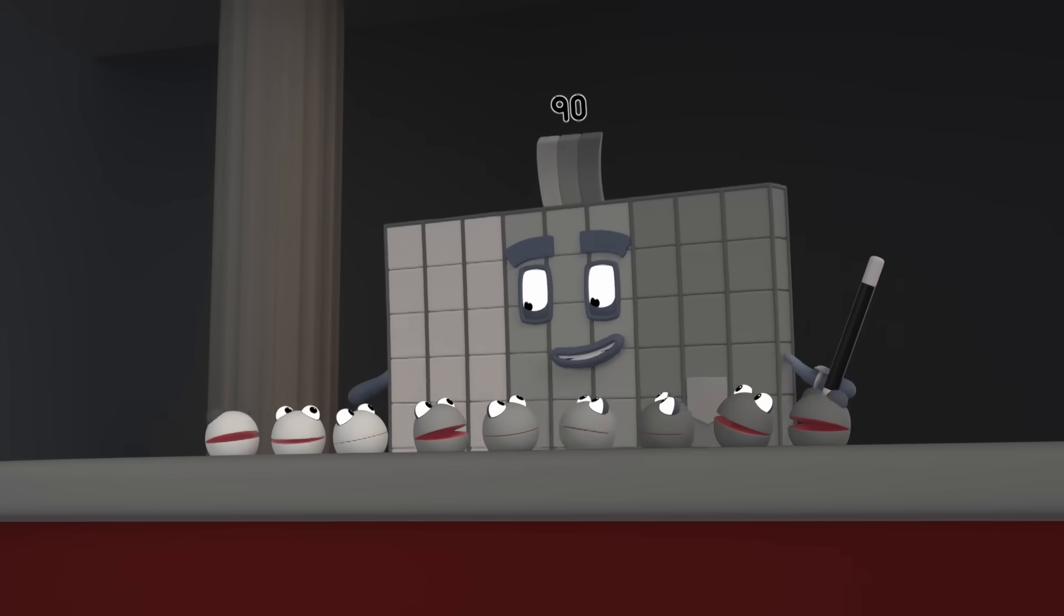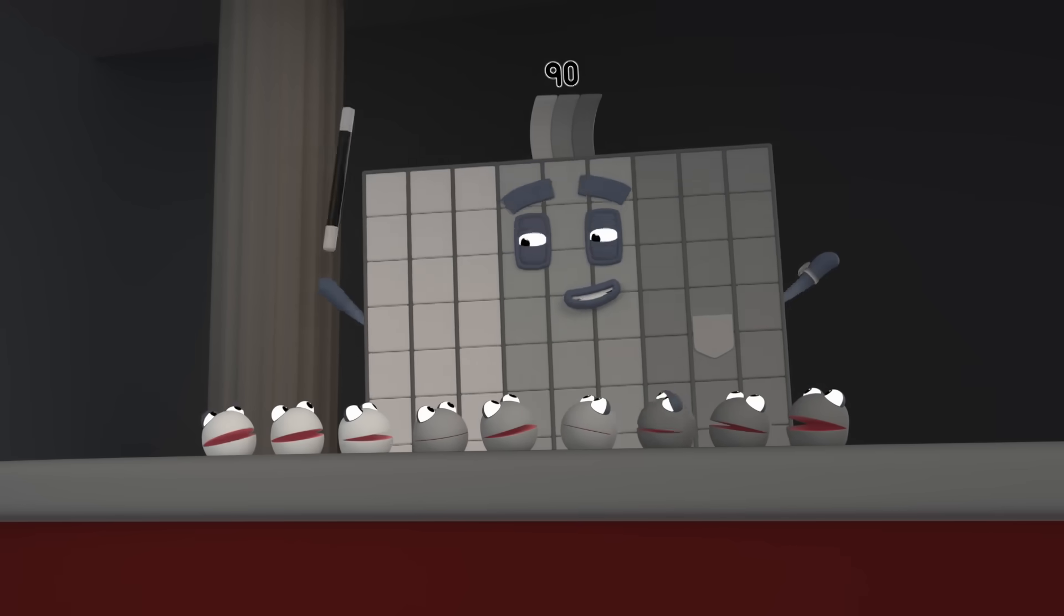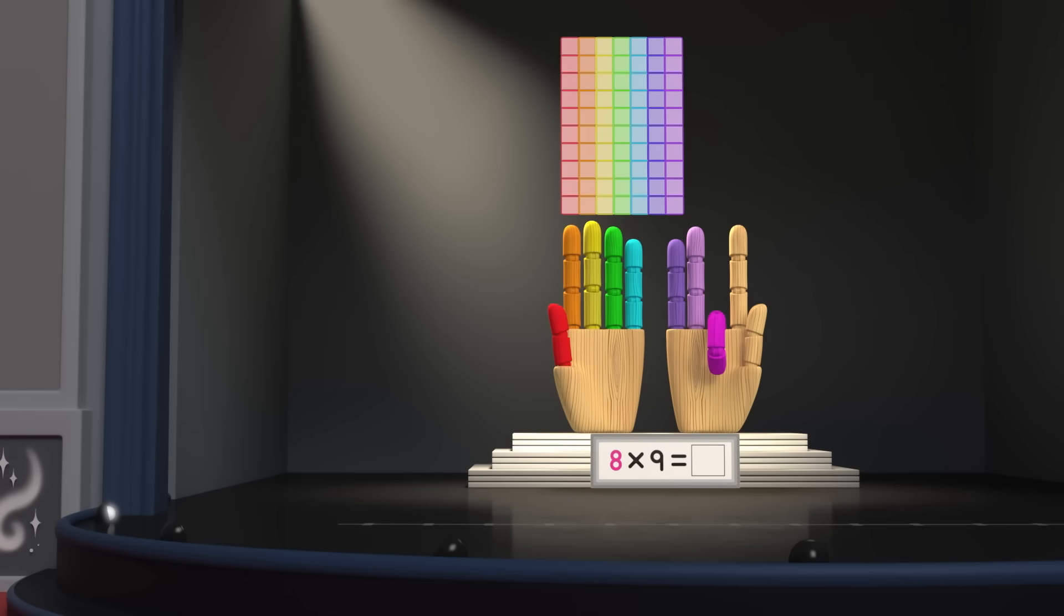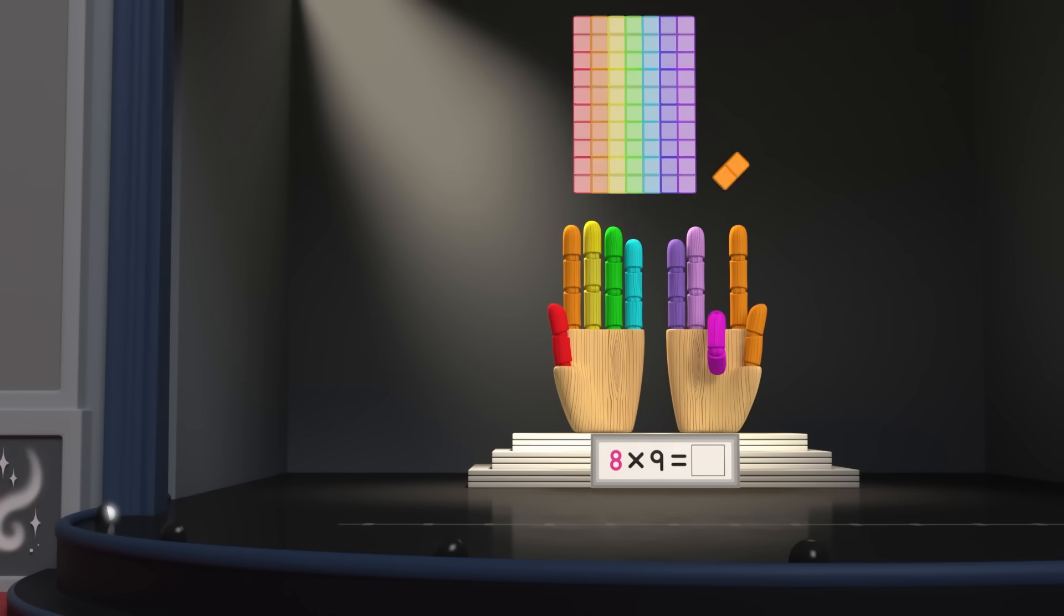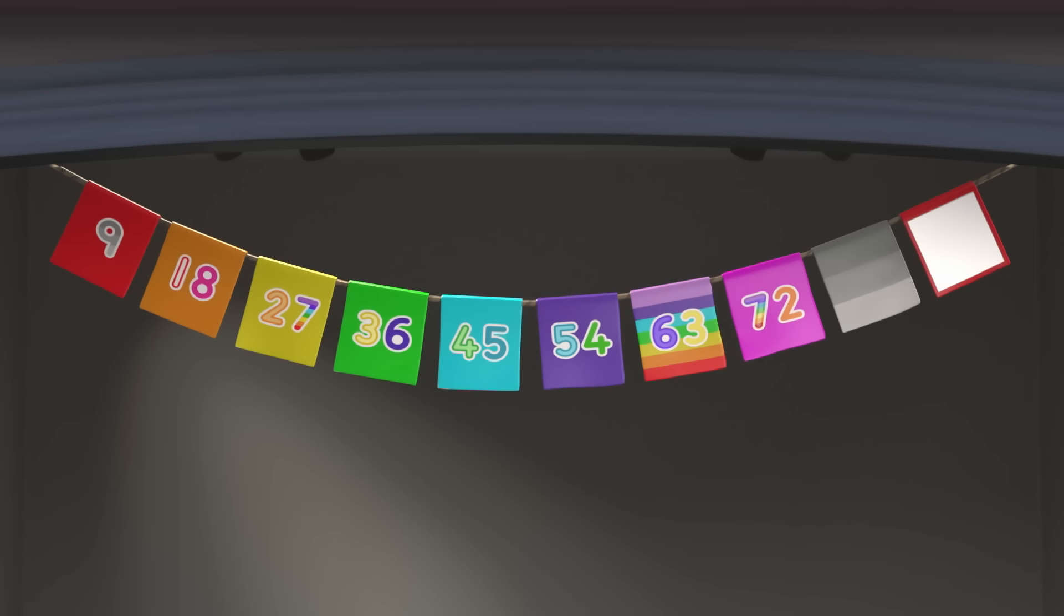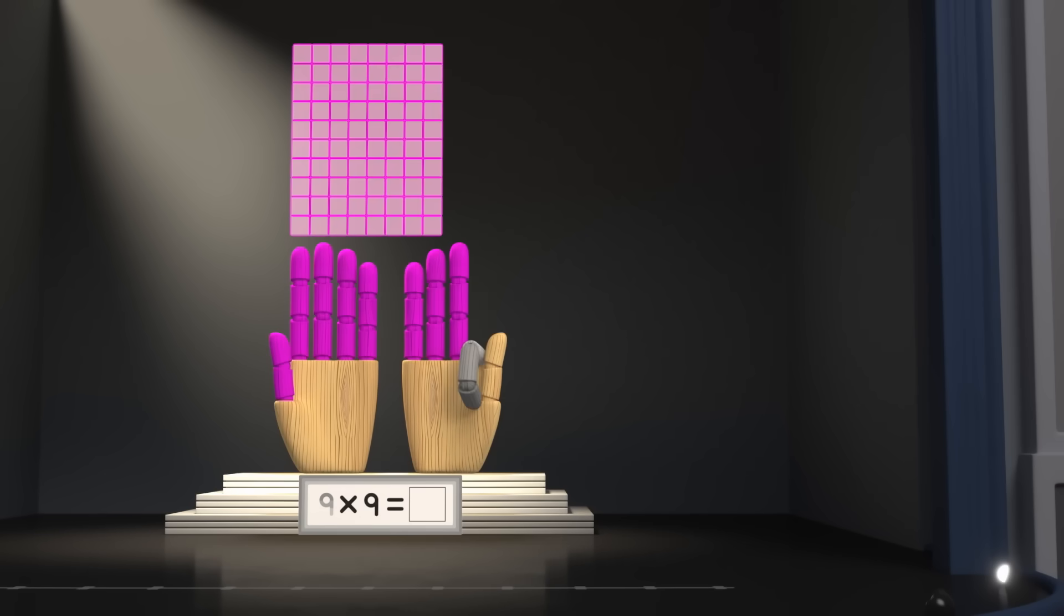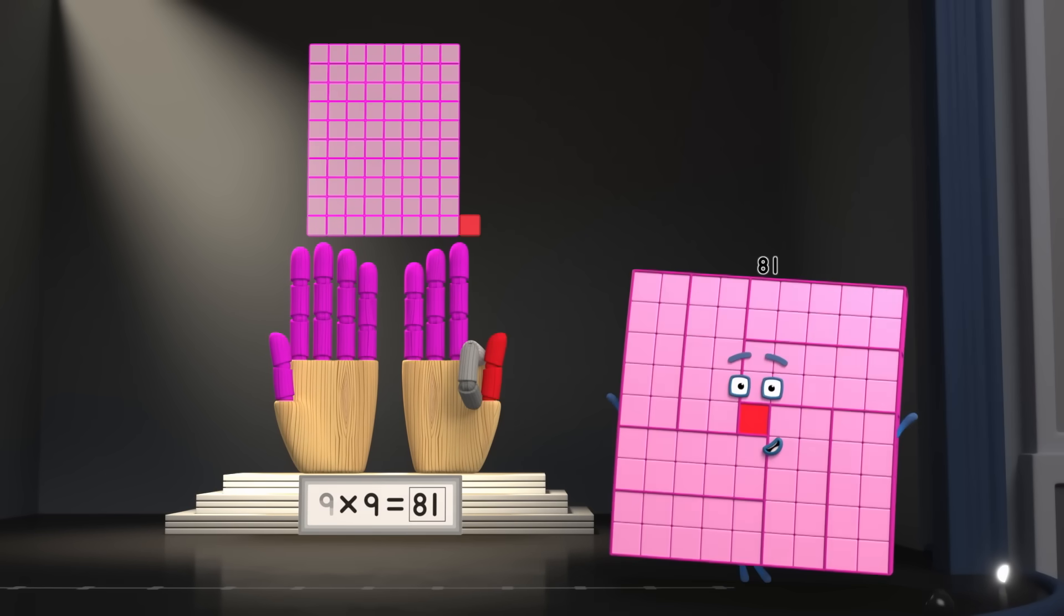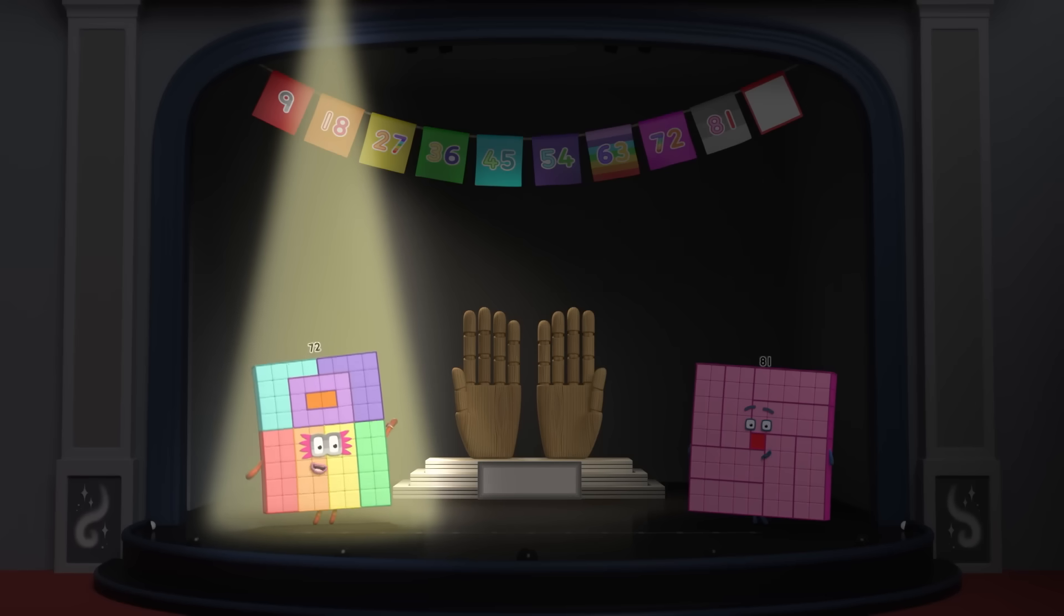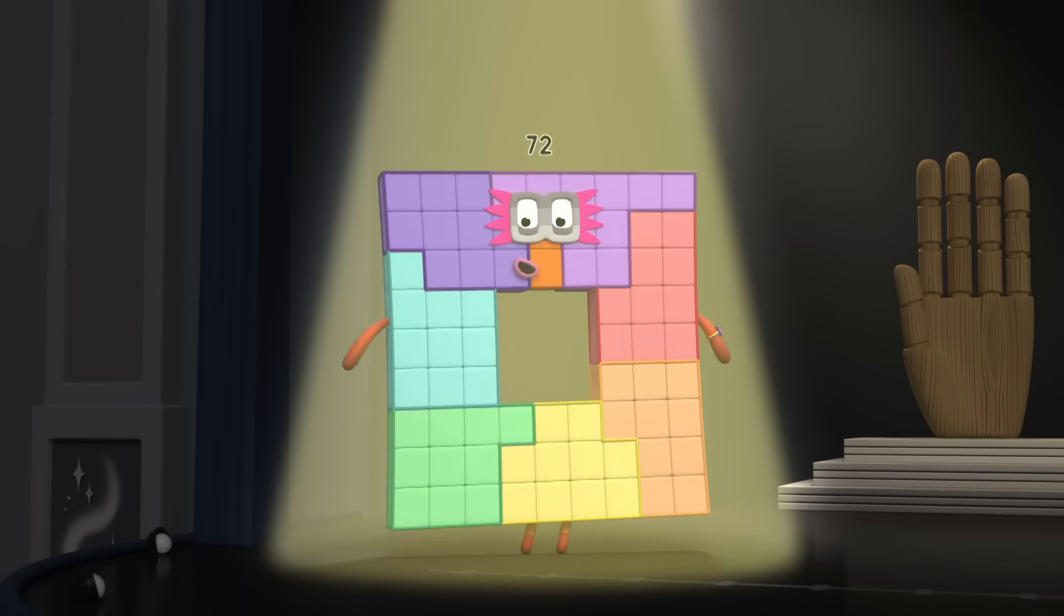Our next act is a double act. So let's welcome them both. Seven tens and two. Seventy-two! Eight tens and one. Eighty-one! Super Sneezer Seventy-two here. And I can make eight square sneezers.